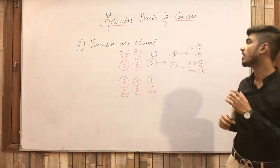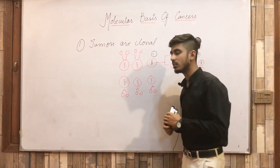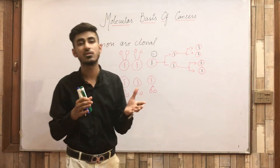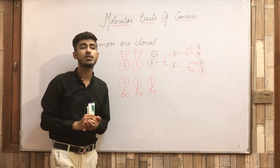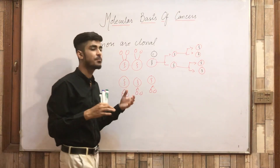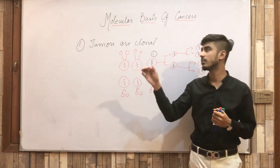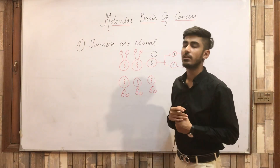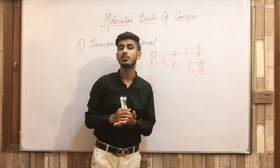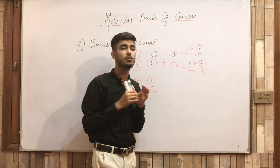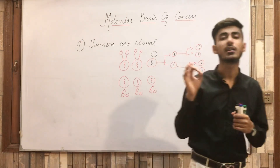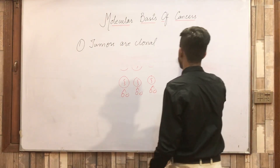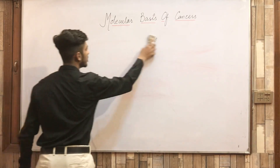The mutations that occur may be due to environmental factors — exogenous or endogenous — or there may be inherited mutations. These factors continuously affect the cell and cause mutations in it. Now, there are basically two important terminologies about mutations that we need to clarify: the first is the driver mutation and the second is the passenger mutation.